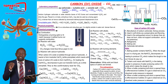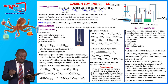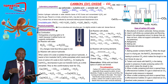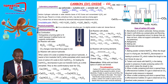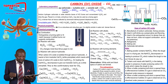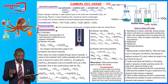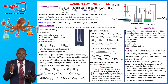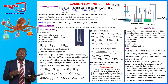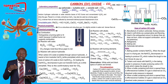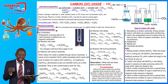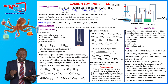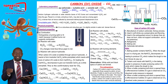Dilute acid is added from the dropping funnel into the flask containing the carbonate. A rapid effervescence occurs, producing carbon dioxide which flows through the delivery tube. The gas is passed through distilled water or sodium hydrogen carbonate to absorb any traces of hydrogen chloride gas. Then it is passed through concentrated sulfuric acid to dry the gas, and collected by downward delivery because it is denser than air.